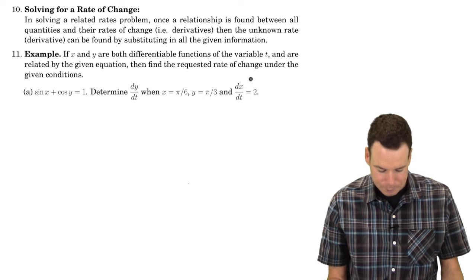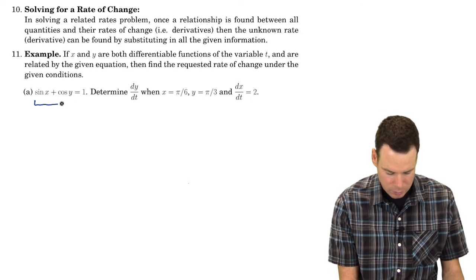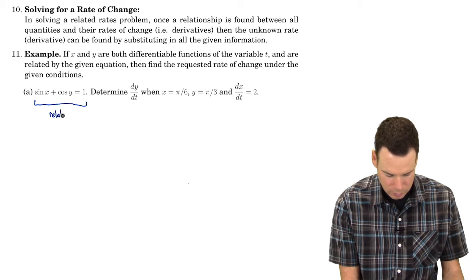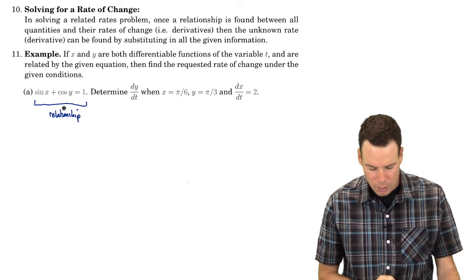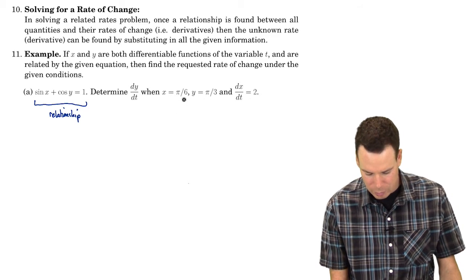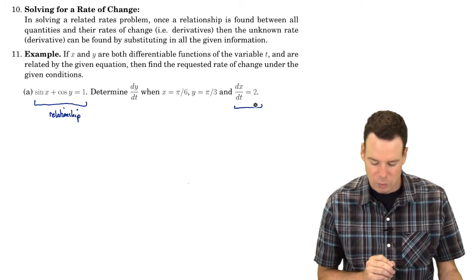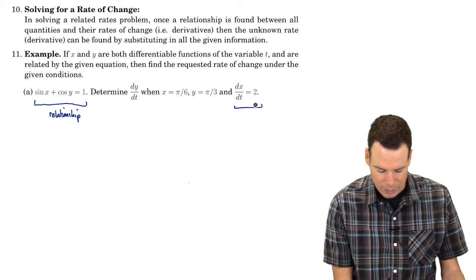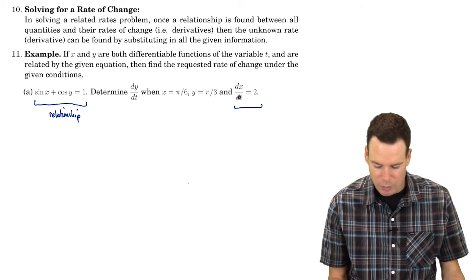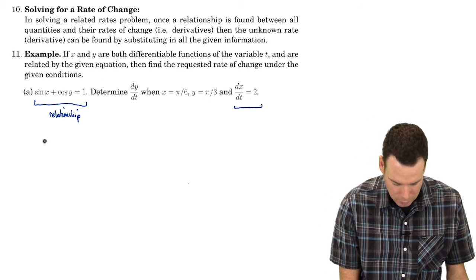Let's look at an example. We have a relationship between x and y: sine of x plus cosine of y is equal to 1. At a particular moment when x is π/6 and y is π/3, we know the derivative of x with respect to t is 2. So x is related to y, we know how fast x is changing — can we determine how fast y is changing? And in fact we can.